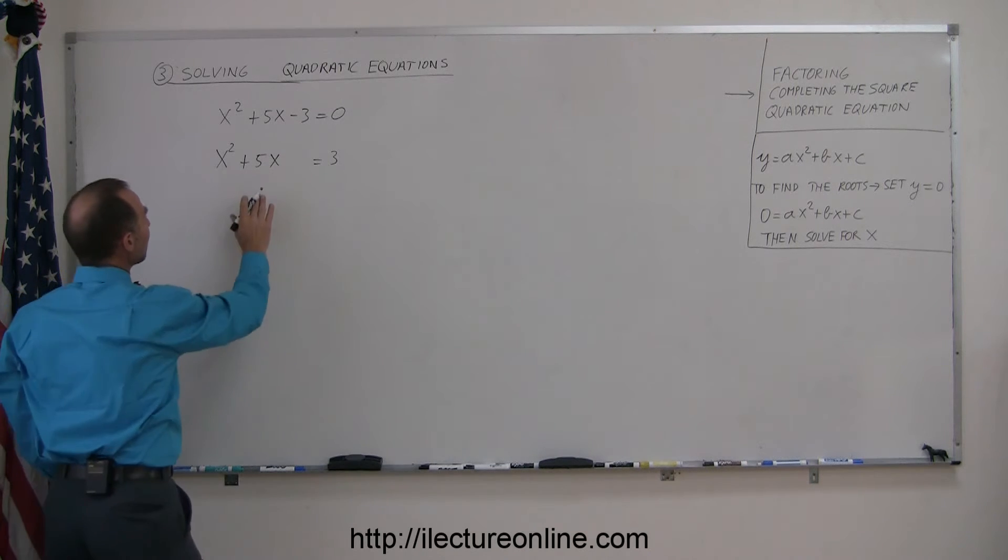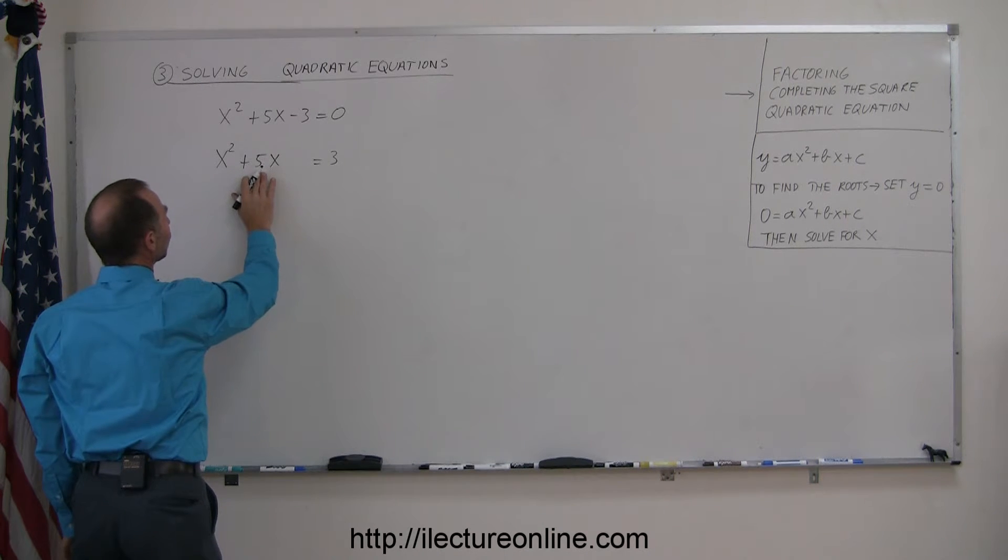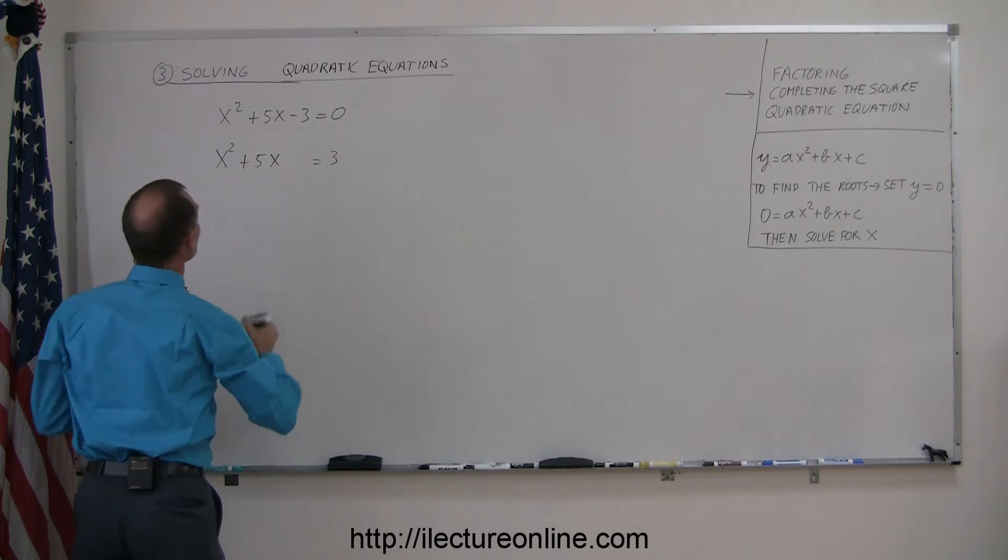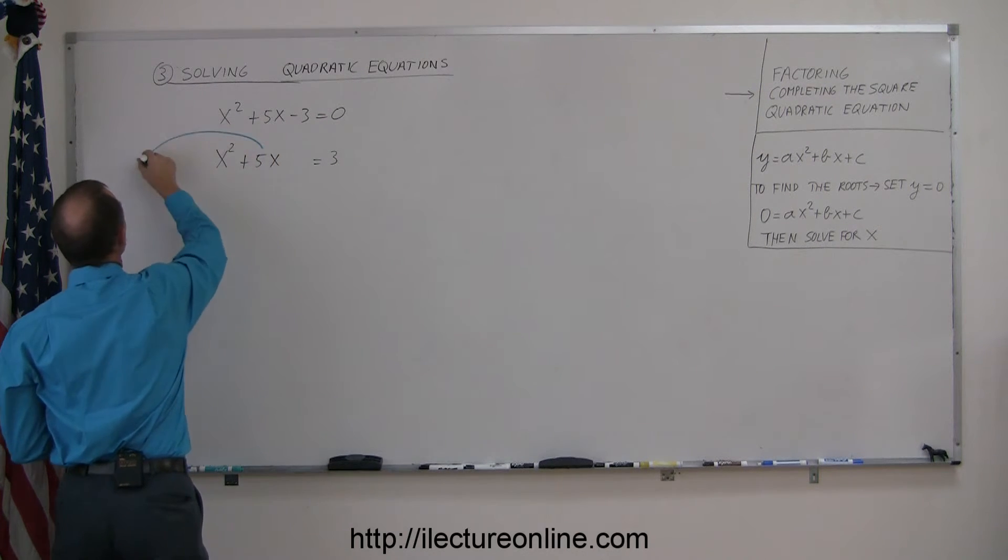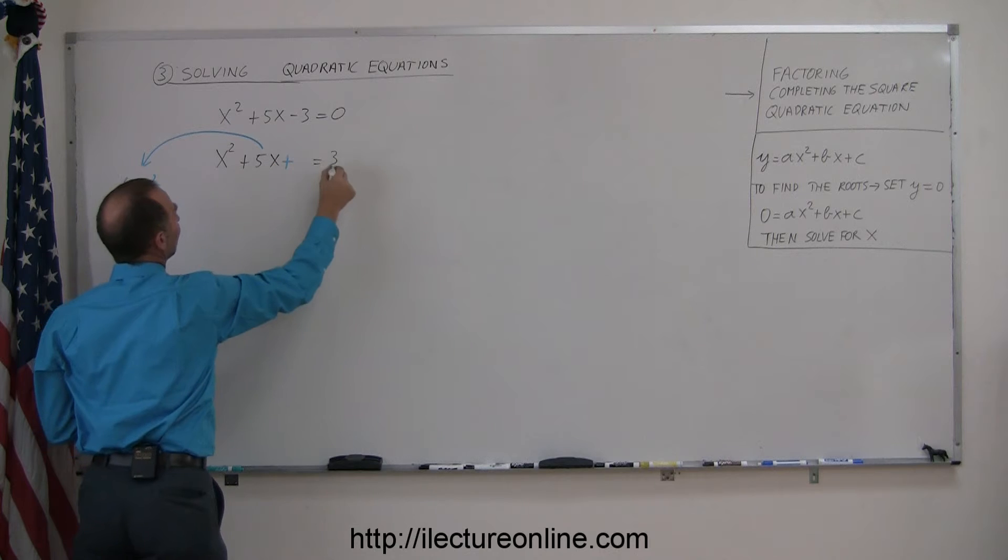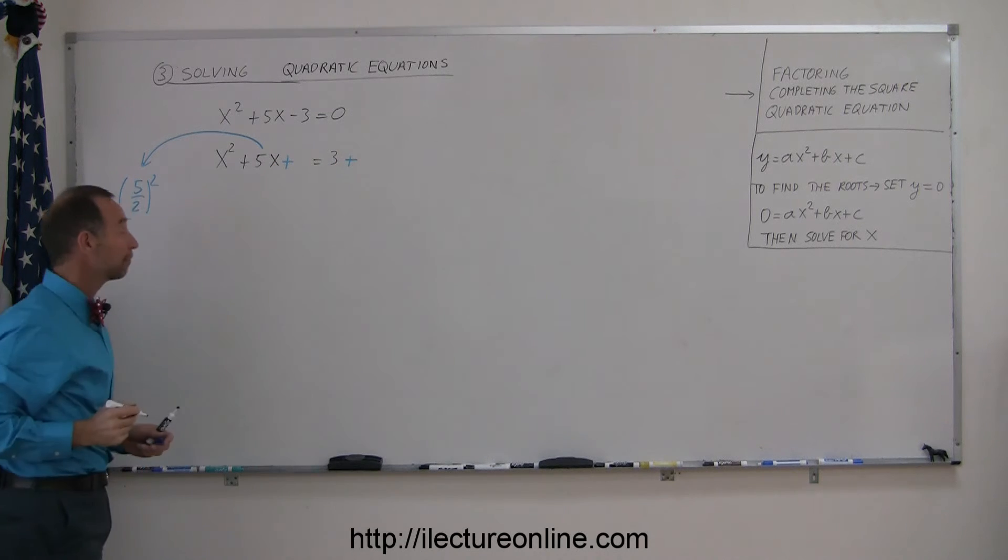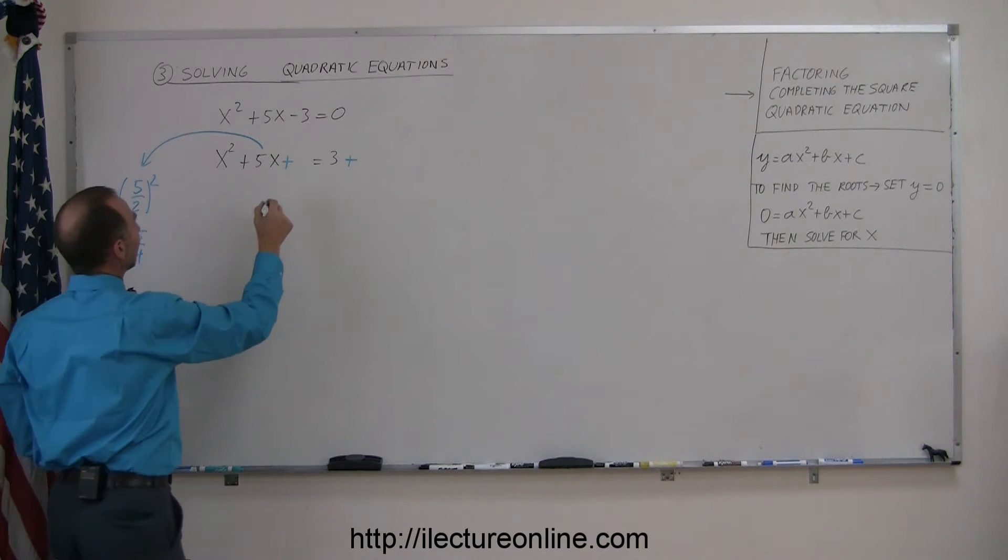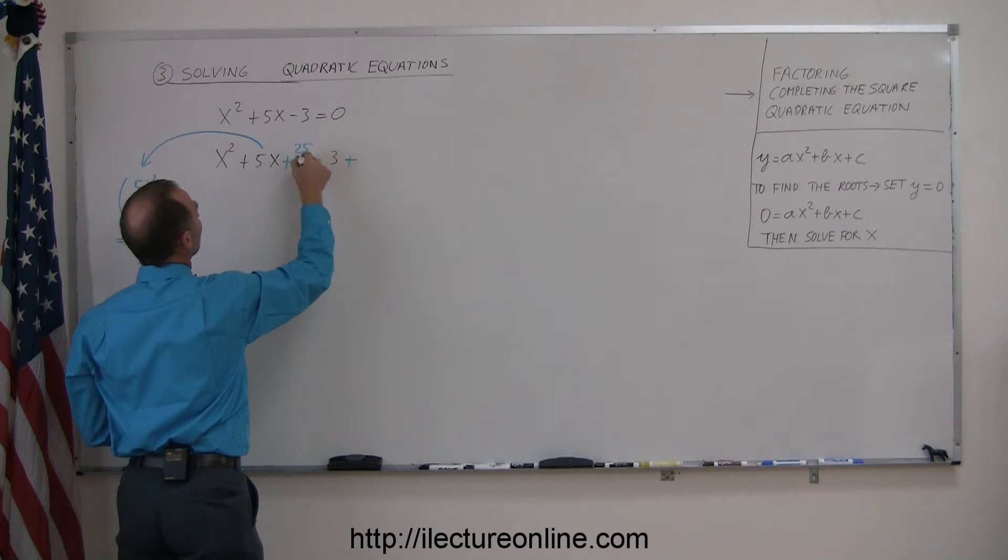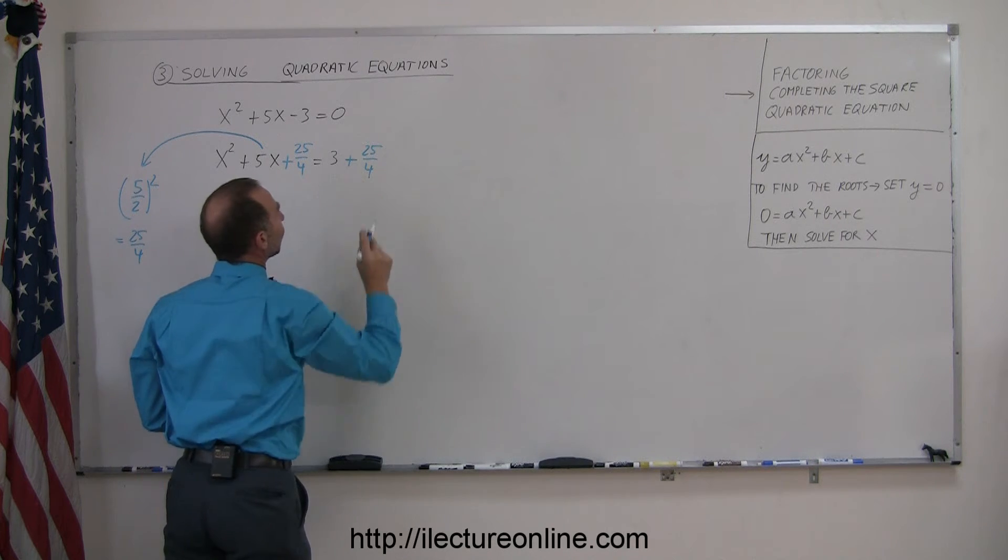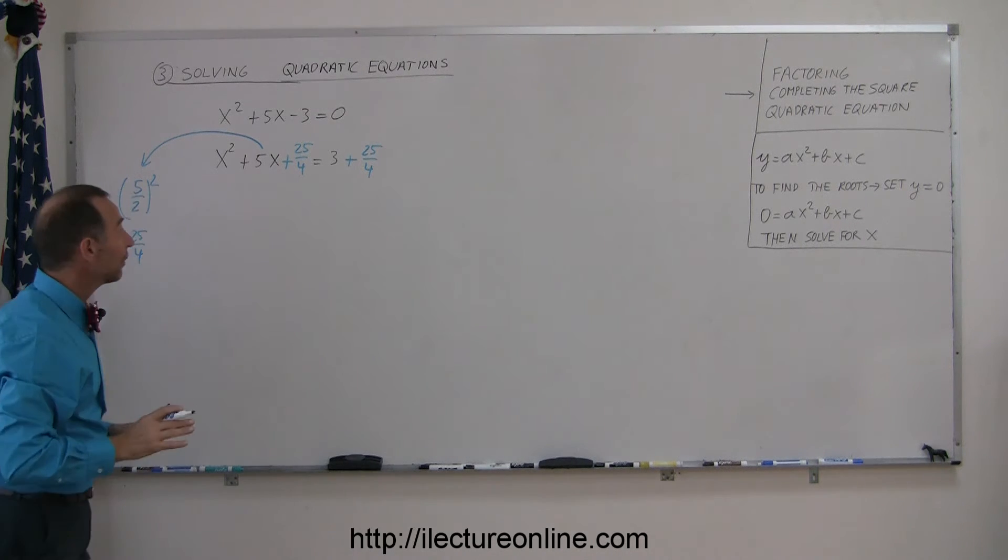The next step is to take the middle term, divide it by 2, square it, and add it to both sides. So we're going to take this middle term, divide it by 2 and square it, and add it to the left side and the right side of the equation. Now, 5 over 2 squared is the same as 25 over 4, so we're going to add 25 over 4 to the left side and 25 over 4 to the right side. So by having done that,